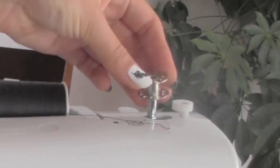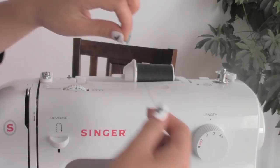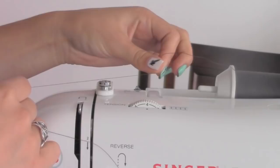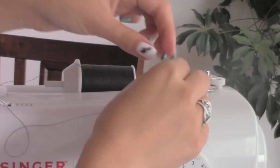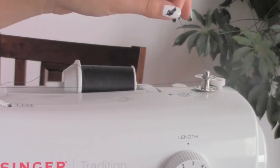Place your bobbin on the bobbin winder and switch it over. Get the thread, wrap it around the thread winder like this. Place the end of the thread inside one of the bobbin holes. It should be sticking out like so.